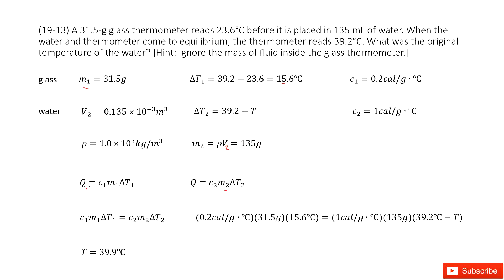Energy is conserved, so we set the heat from the glass equal to the heat absorbed by the water: C1·M1·ΔT1 = C2·M2·ΔT2. We input all the known quantities, and the only unknown is T. Solving this equation, you get T around 40 to 30 degrees. Thank you.